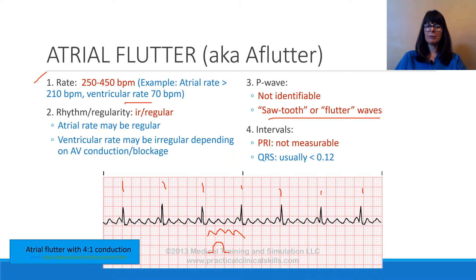The rhythm can be regular or irregular — the atrial rate may be regular while the ventricular rate may be irregular, depending on the AV conduction or blockage, which we'll discuss shortly.